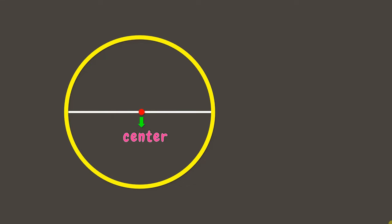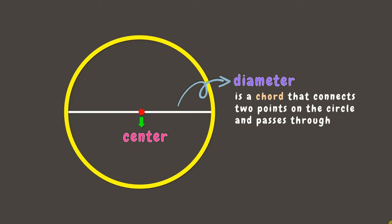Now, this chord is also called the diameter. A diameter is a chord that connects two points on the circle and passes through the center. A diameter can be like this, this, this, or like this as long as it passes through the center.